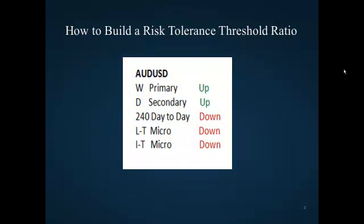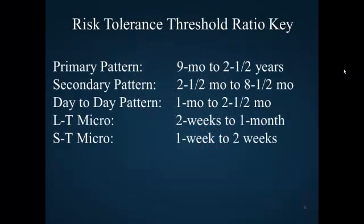How to build a risk tolerance threshold ratio? Let's get right to it. First we need to give you a key — we need to define the time periods which we're going to measure to create that ratio. Primary pattern: 9 months to 2.5 years. Secondary pattern: 2.5 months to 8.5 months. Day to day pattern: 1 month to as long as 2.5 months. Long term micro: 2 weeks to a month. Short term micro: 1 week to 2 weeks. These are our 5 basic time patterns.